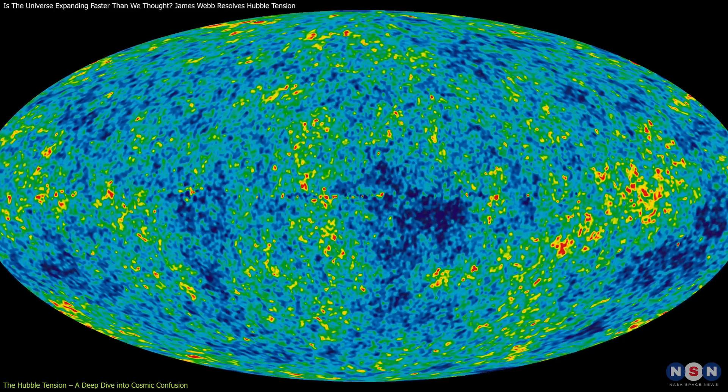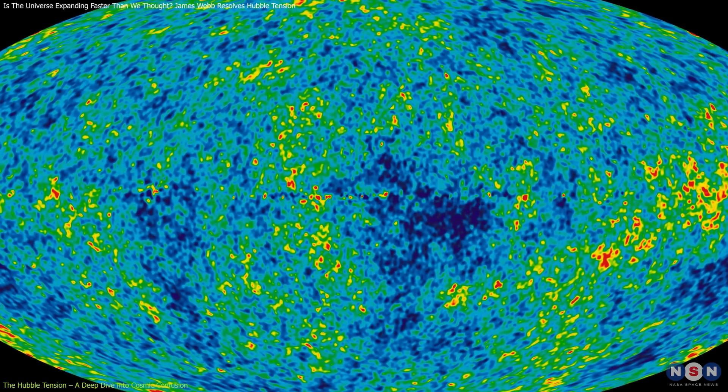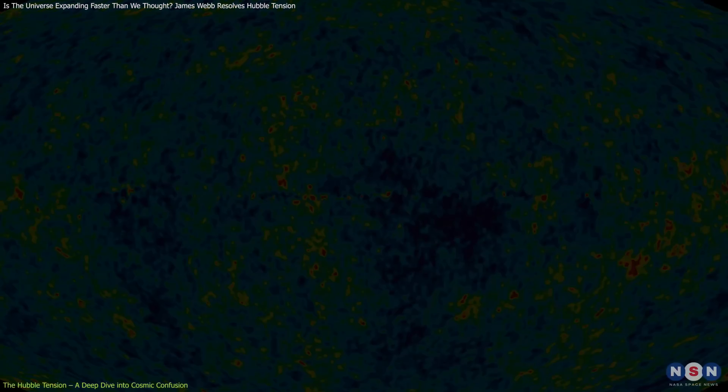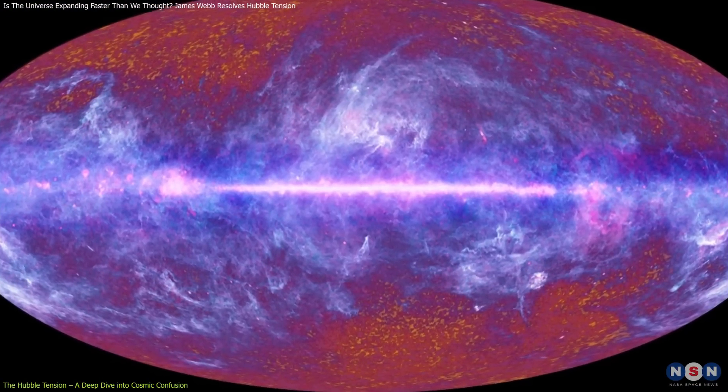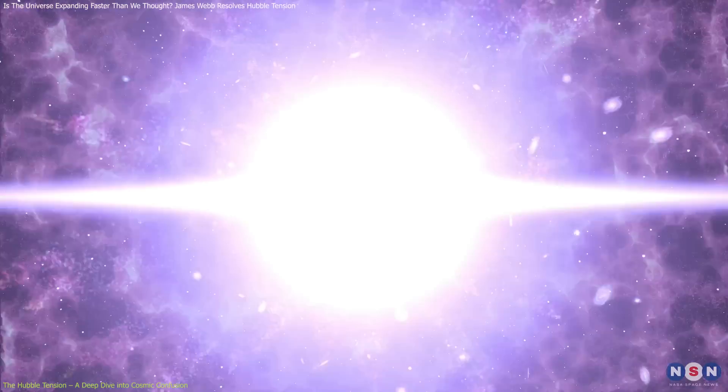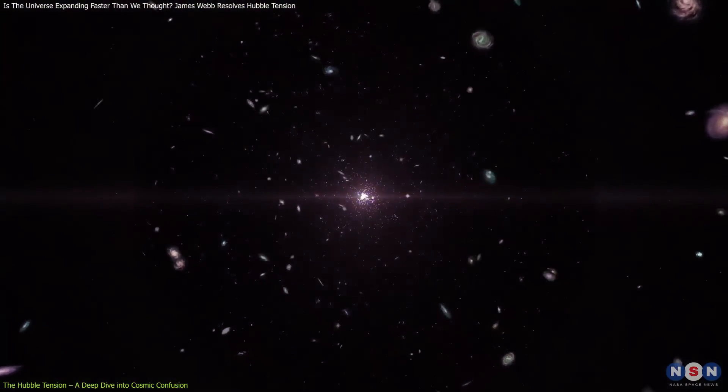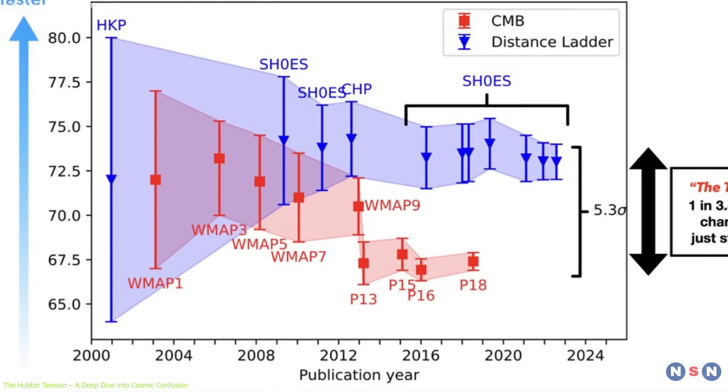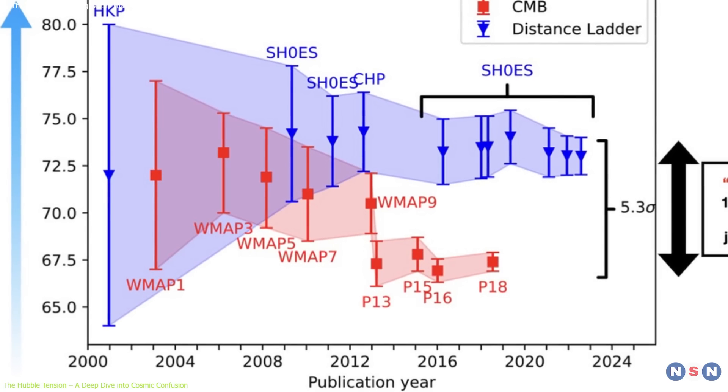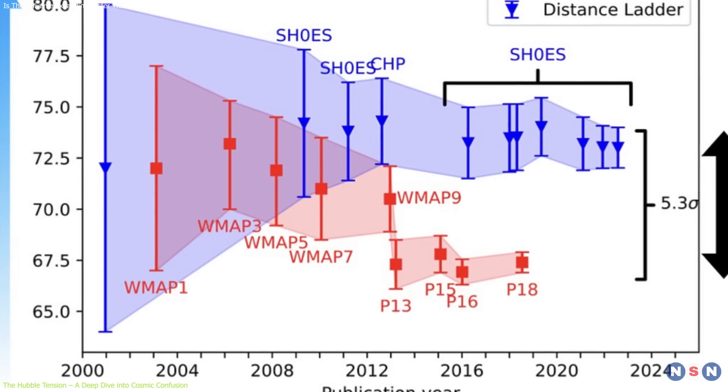The first method analyzes the cosmic microwave background, the residual light from the Big Bang. By studying this ancient radiation, scientists estimate the universe's expansion rate during its earliest moments, which has yielded a precise Hubble constant of around 67.4 kilometers per second per megaparsec.